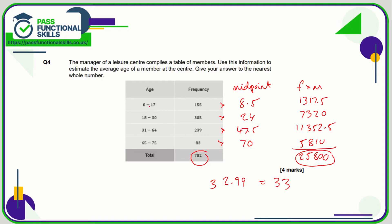We know that 155 people are between the ages of 0 and 17. We don't know how old they are, so we're assuming that all of them are halfway between 0 and 17, so we're assuming that they're all eight and a half years old. So if we're working out the average age, we need the total age divided by the number of people.